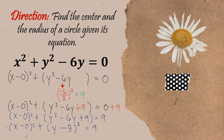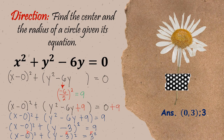This is not yet center-radius form — we need to convert 9 into exponential form. So we have (x minus 0) squared plus (y minus 3) squared equals 3 squared. Now we have our h, our k, and our r. The final answer: center is (0, 3) and length of radius is 3.